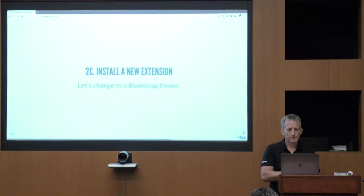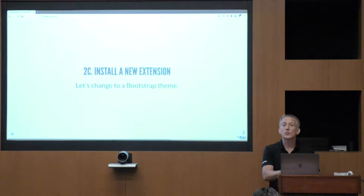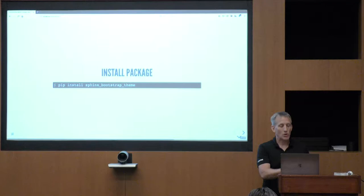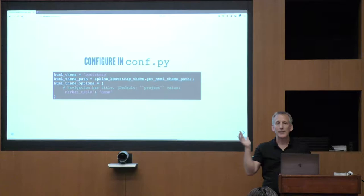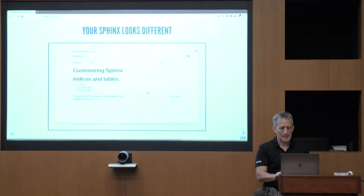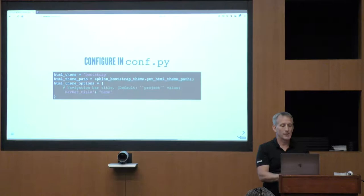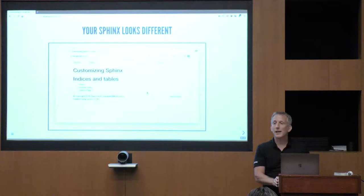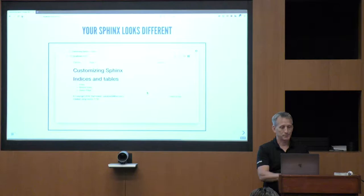One last simple thing: we're going to install an extension — a Python package — which adds new capabilities to Sphinx written by someone else. I'm going to add a theme called Bootstrap. I'll pip install that package. Just because the package is in my virtual environment doesn't mean it's used — I have to tell Sphinx there's a Sphinx extension over there by editing conf.py, including the extension and saying that is my theme. Now my site looks different because I've switched to a different theme.